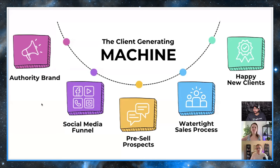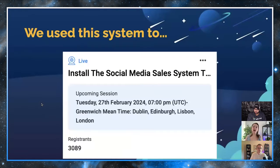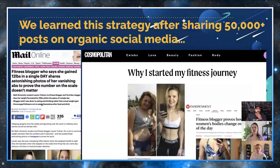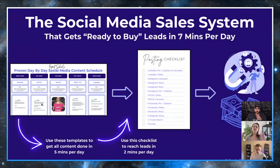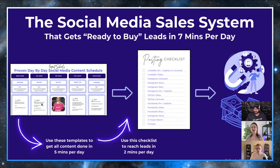Today is really all about the authority brand, the social media funnel, and pre-sale prospects. For some clarity: we ran a workshop in February 2024 and used this system to get 3,089 people registered. We learned this strategy after sharing more than 50,000 posts on organic social media — it landed me in various publications all around the internet. This workshop is where we install the social media sales system that gets ready-to-buy leads in seven minutes a day, using proven templates you can reuse again and again.